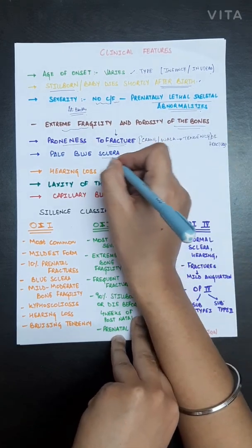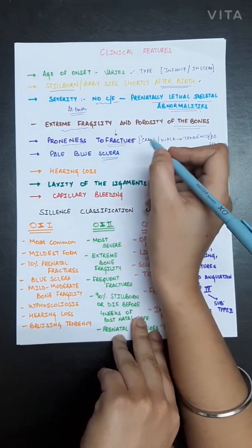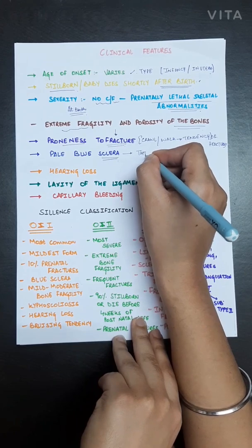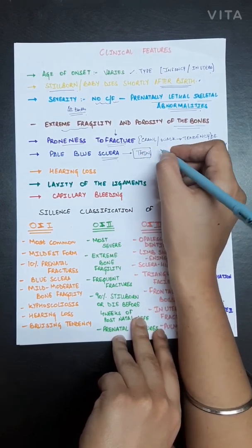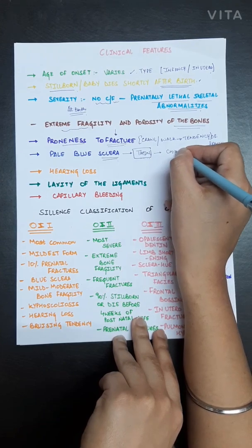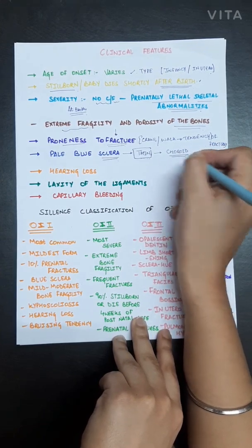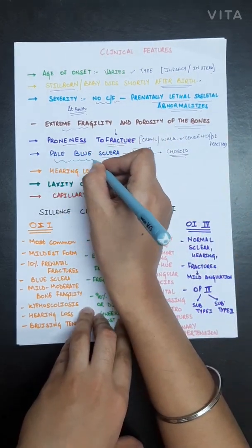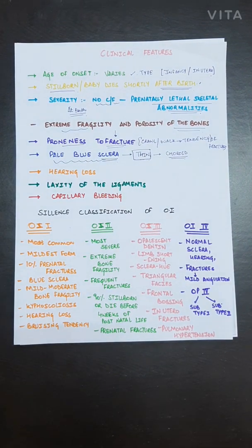Since type 1 collagen is also present in the sclera, the sclera becomes very thin. This allows the underlying choroid to show through, which is why the sclera appears pale blue. Pale blue sclera is a characteristic feature of osteogenesis imperfecta.